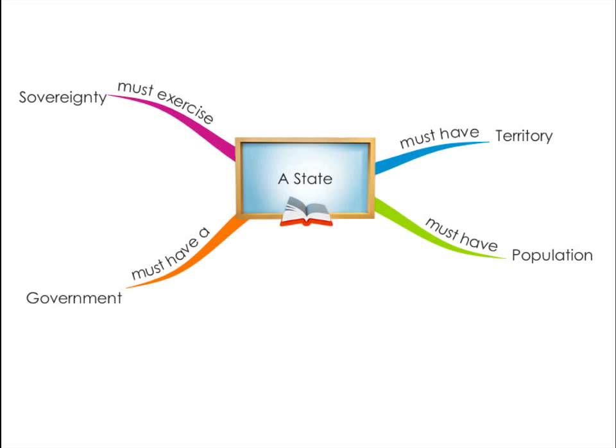To be a state, all four of the characteristics must be present. If you can check all four characteristics present and accounted for, then you have a state in terms of political science.